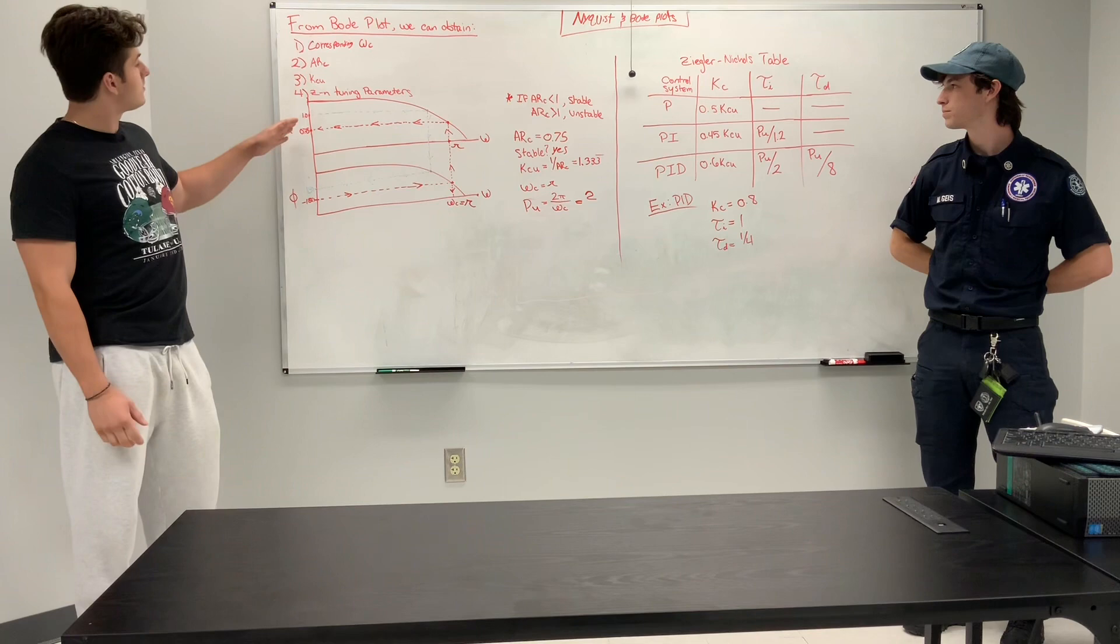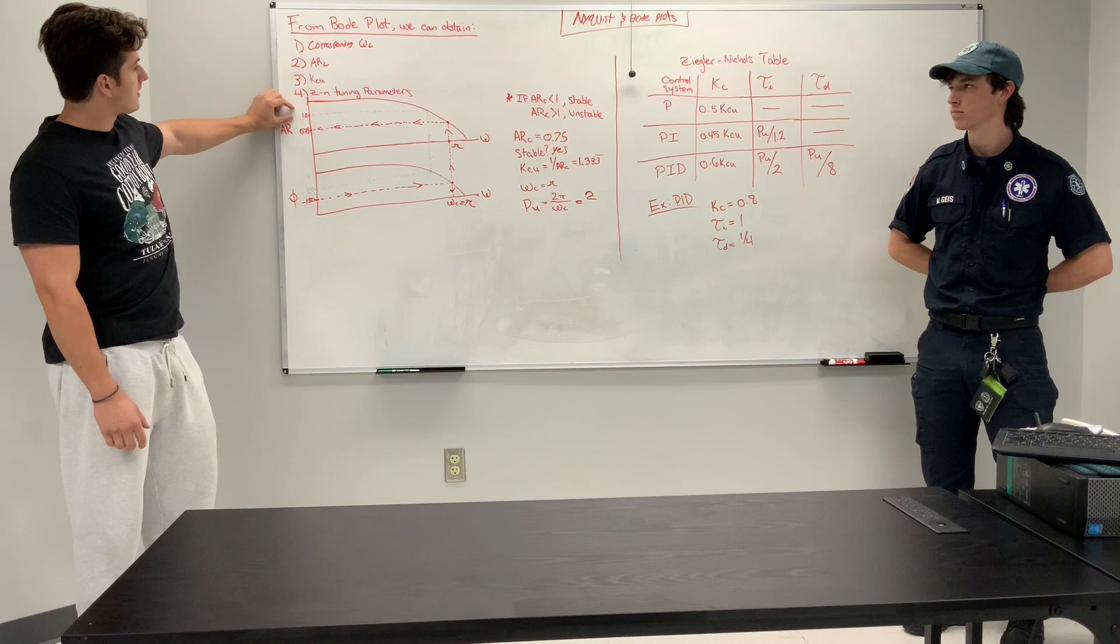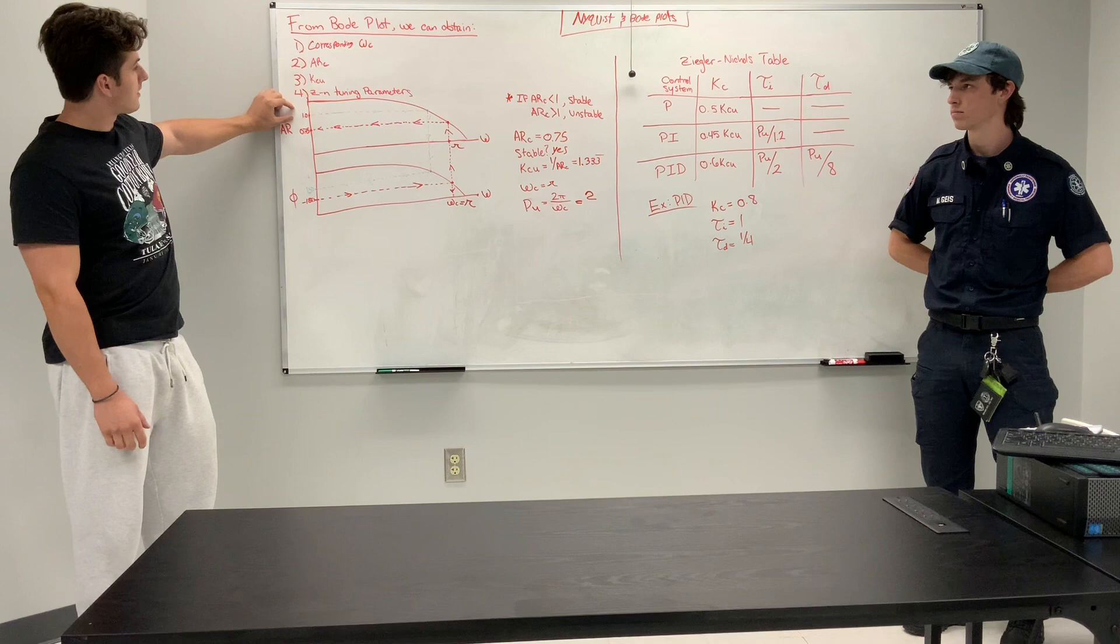Also, it's worth mentioning that you can also determine, once you figure out these two graphs, where 1 falls on the amplitude ratio graph, you can take that over to its corresponding crossover frequency, and then determine from the phase angle graph the angle at which you achieve that amplitude ratio of 1 for your plot.